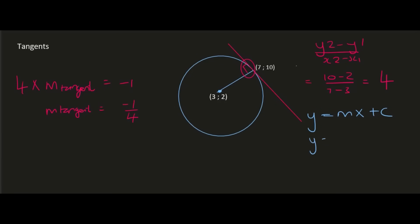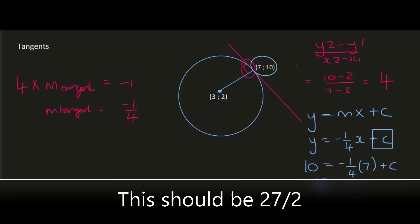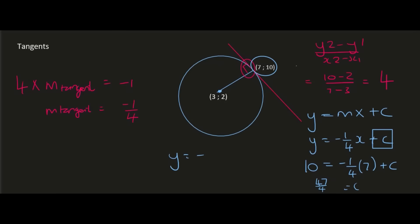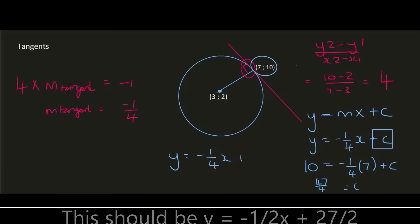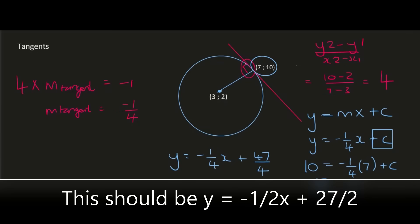So I can fill in y = -¼x + c. To find c, substitute any point on the tangent — that's the point (7, 10). The y value is 10 and the x value is 7. Solving for c gives us 47/4. So the equation of the tangent is y = -¼x + 47/4.